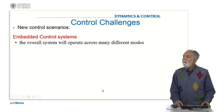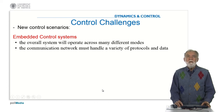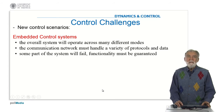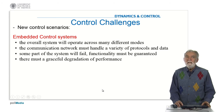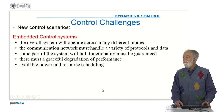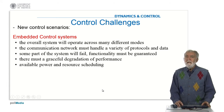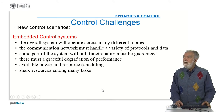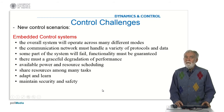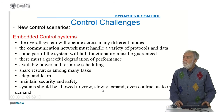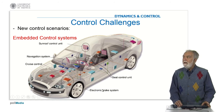We can also consider embedded control systems where the overall system operates across many different modes and the communication network must handle a variety of protocols and data. Some parts of the system may fail and functionality must be guaranteed, and degradation of performance should be graceful — we should avoid any disaster. We must schedule the use of available power and other resources like memory and computing, because resources are shared by many tasks and many control loops. We should adapt and learn according to environmental conditions, maintain security and safety, and the system should be allowed to grow, expand, or even contract to meet demand.